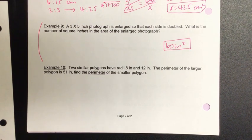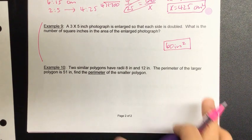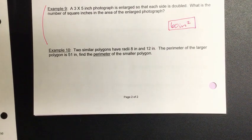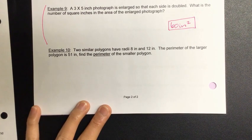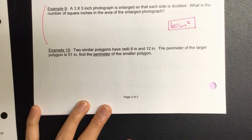What's a radii? It's a plural form. Of a radius. Why does it just have two? That seems so weird. Macy, I'm recording. All right, Brody. Let's read example number 10. Last one. Two similar polygons have radii 8 inches and 12 inches. The perimeter of the larger polygon is 51 inches. Find the perimeter of the smaller polygon.